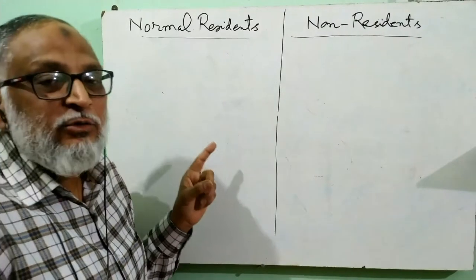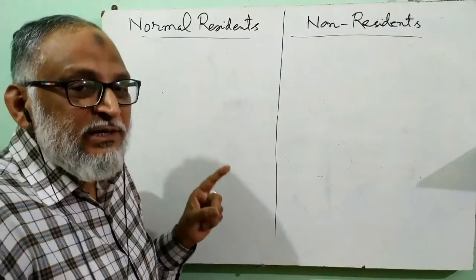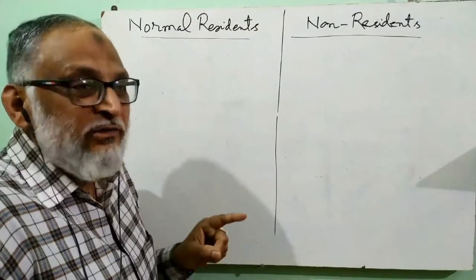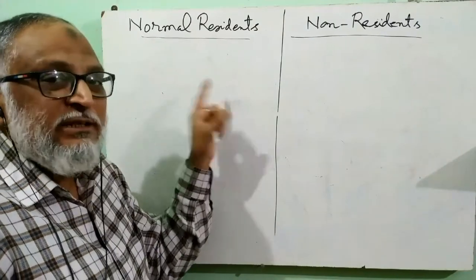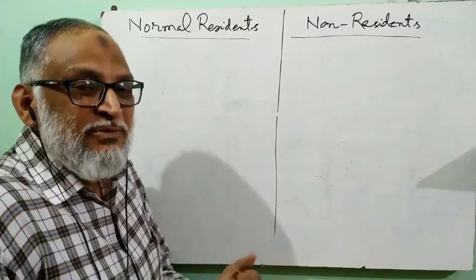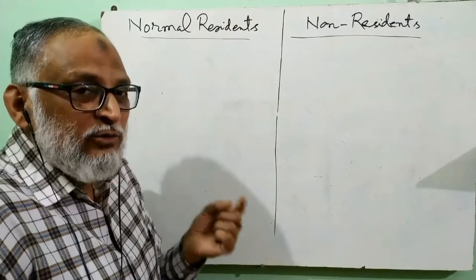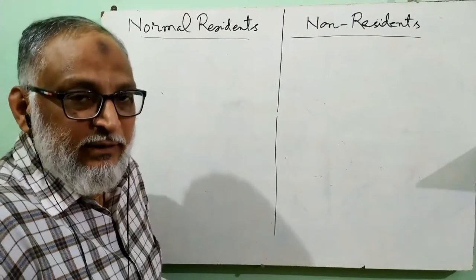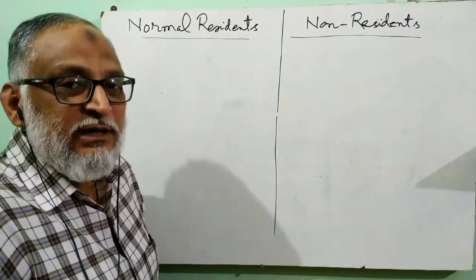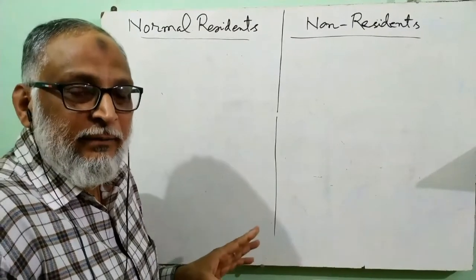First of all, I will tell you the meaning of both the terms. Normal resident — we call that person whose economic interest lies in that particular country. What is this economic interest? It means the person living in a country wants to get settled in that country — wants to earn there, spend there, and save there. That means he wants to remain in that country.